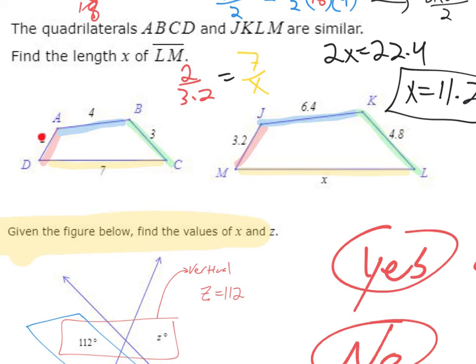So I set a ratio. The ratio of 2 to 3.2 has to be the same as the ratio from 7 to X. I could have done 4 and 6.4, or I could have done 3 and 4.8. It does not matter which side pair you choose, just as long as they're corresponding. From here, we can cross multiply. So 2X and then 7 times 3.2, which is 22.4 and solve.